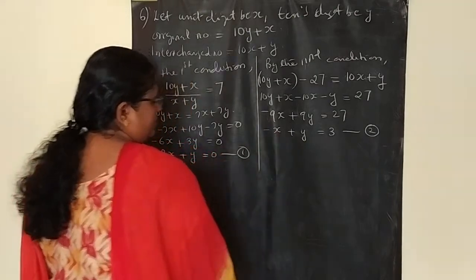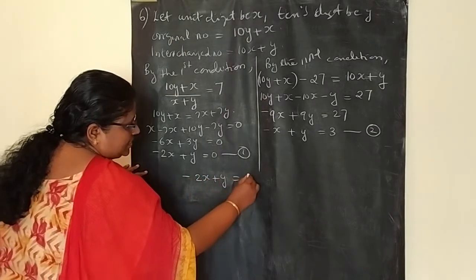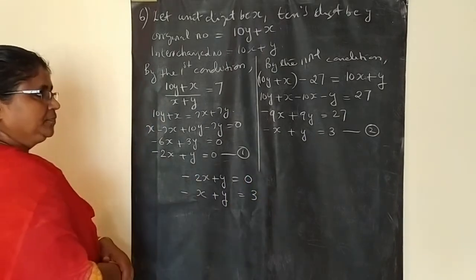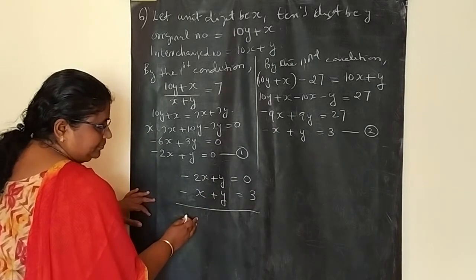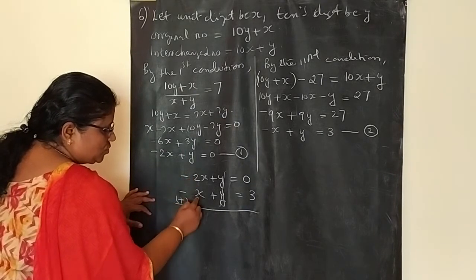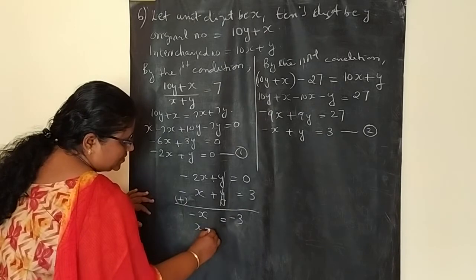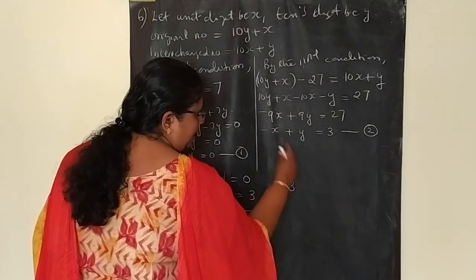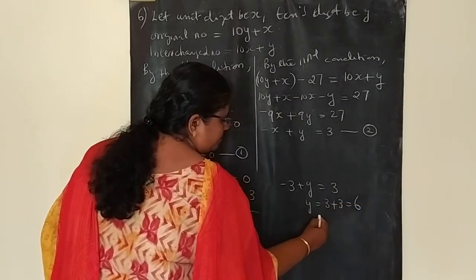Now, solve equations 1 and 2. First equation: minus 2X plus Y is equal to 0. Second equation: minus X plus Y is equal to 3. In both equations, Y is equal, so we subtract. The Y terms cancel. Minus 2X minus (minus X) gives minus X, and 0 minus 3 gives minus 3. So X is equal to 3. Substituting X equals 3 into the second equation: minus 3 plus Y is equal to 3, so Y is equal to 6.